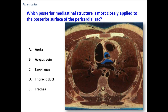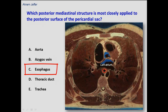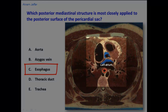This is the left atrium, which forms the base of the heart — the posterior surface of the heart. Behind the left atrium is located the oblique pericardial sinus, and immediately behind the pericardial sinus is the esophagus. So the esophagus lies behind the oblique pericardial sinus.